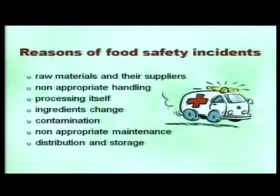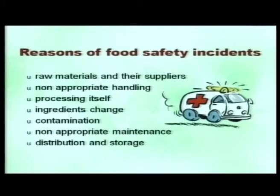There can be failure at the stage of raw material and their suppliers. There can be failure due to non-appropriate handling of the product — mishandling at the raw material stage, the finished product stage, the in-between processing stage, or even at the storage stage. You can imagine if there are cold chain abuses or temperature abuses — this will lead to spoilage of the product.